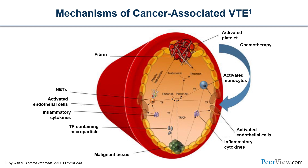Other blood cells in the circulation, such as monocytes, can be activated to release tissue factor. Neutrophil extracellular traps may also release tissue factor and other procoagulant cytokines. Various inflammatory cytokines can be released both by the tumor and by systemic therapeutic agents, including immune checkpoint inhibitors. And the role of activated platelets is also recently being recognized and appears to contribute to the hypercoagulability of cancer as well.